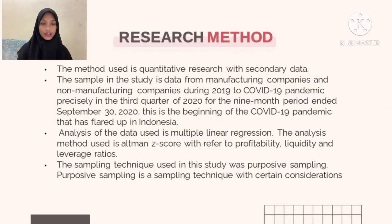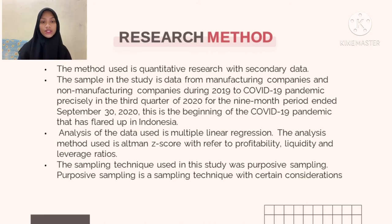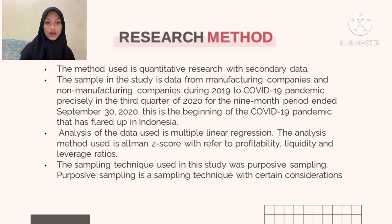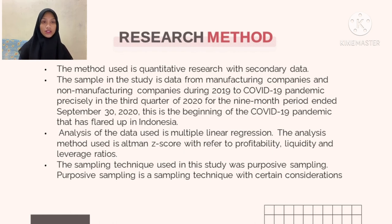The last point is the research method. The method we use is quantitative research with secondary data. The sample in the study is data from manufacturing and non-manufacturing companies across industries during 2019 to 2020, precisely in the third quarter — the nine-month period ended September 30, 2020 — which is the beginning of the COVID-19 pandemic spread in Indonesia. For the analysis, we use multiple linear regression and the Altman Z-score with reference to profitability, liquidity, and leverage ratios. For sampling, we use a purposive sampling technique with certain considerations.